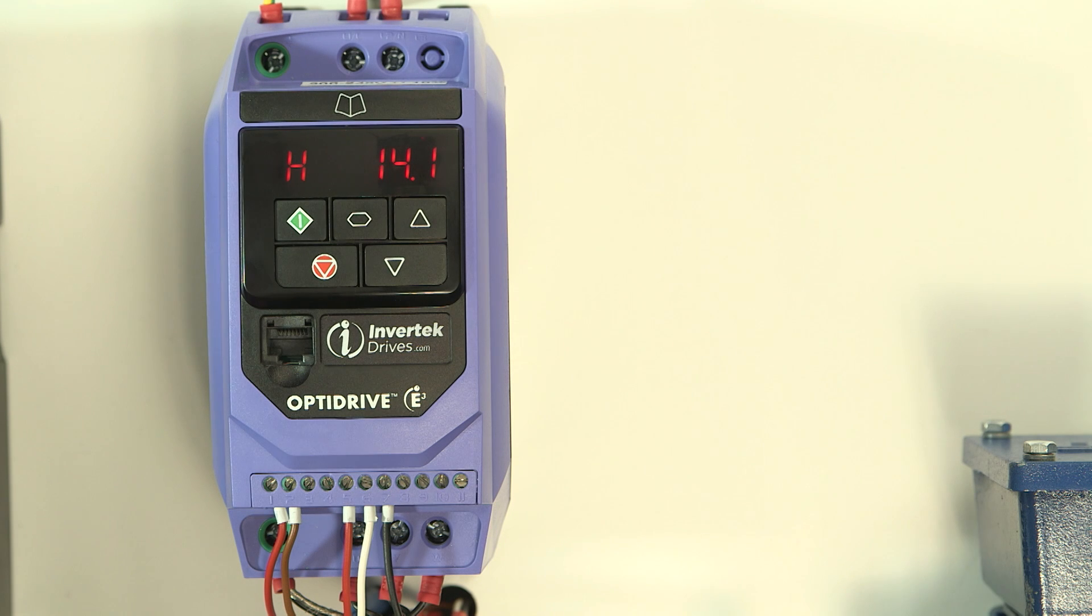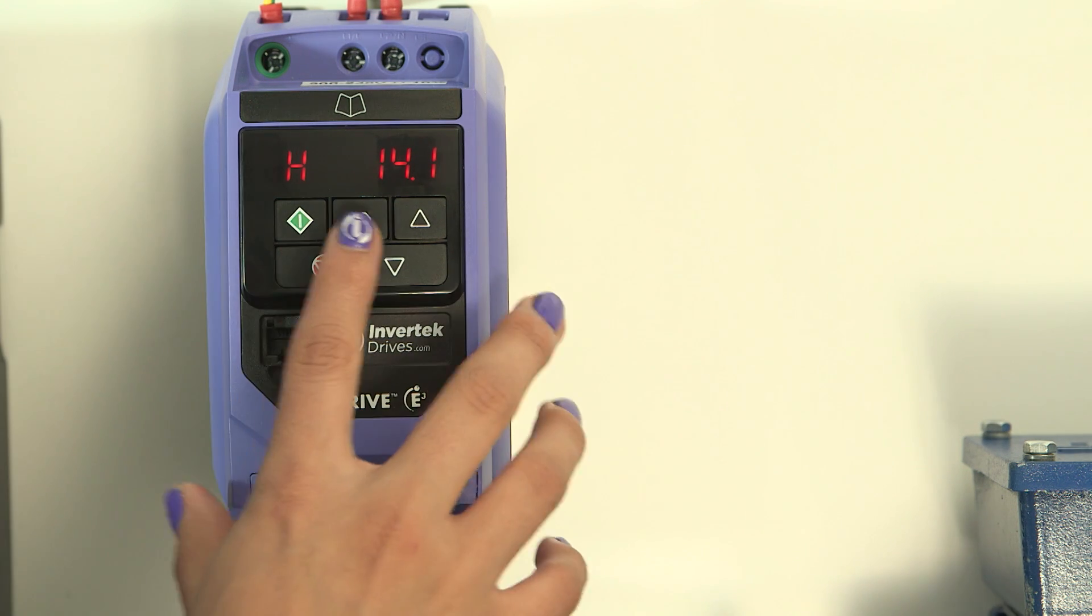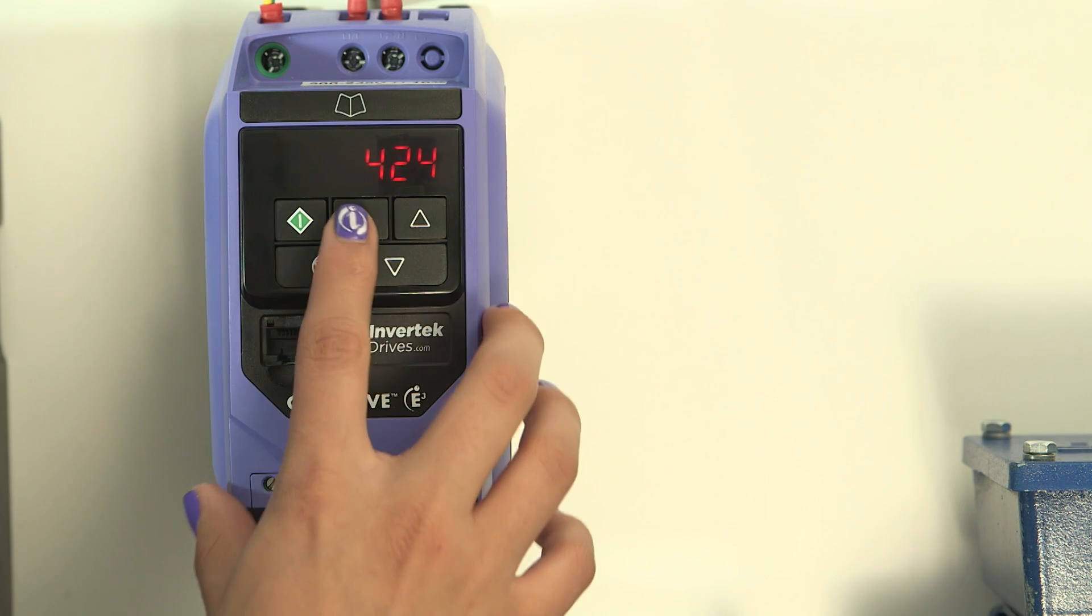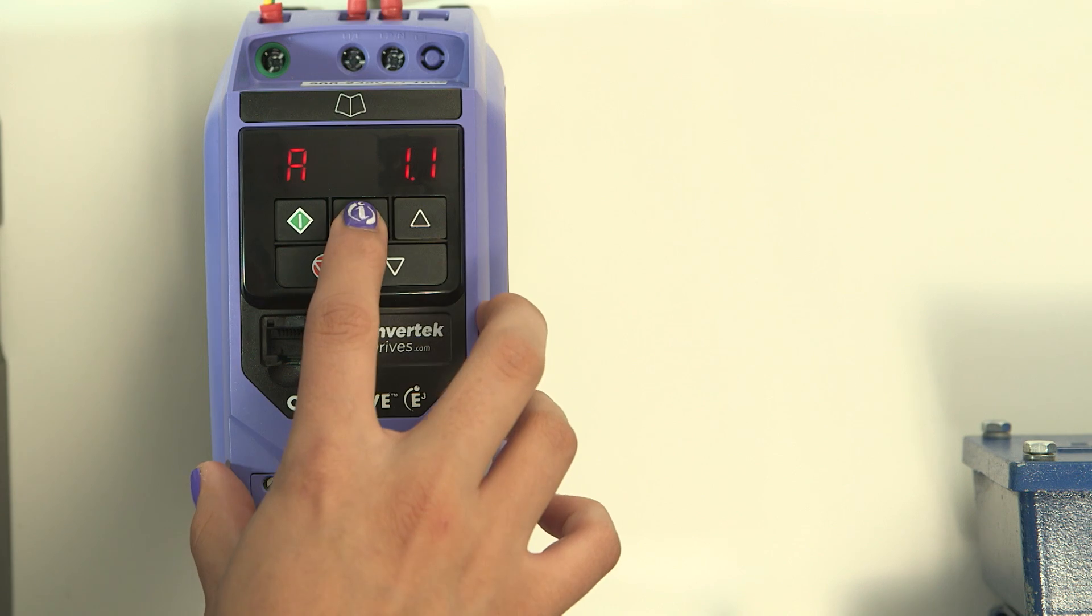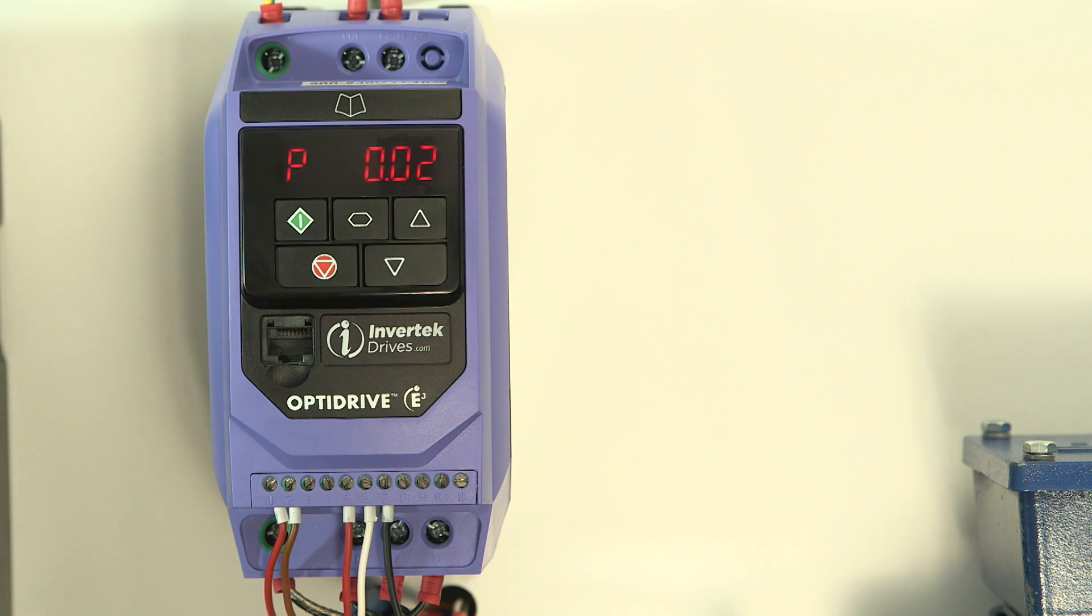The display is currently showing the output frequency. With the drive running, a short press on the navigate button will allow you to see the RPM, the output current, or the output power. Of course, there is no load on this motor.